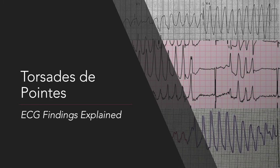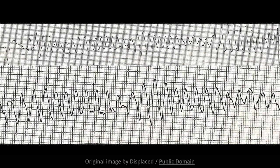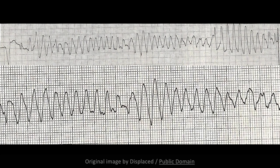This lecture will describe the classic ECG findings associated with torsade des points. Torsade des points is a polymorphic ventricular tachycardia. Note that the QRS complexes show progressive changes in height, width, shape, and axis. Torsade des points translates to 'twisting of the points' — quite an appropriate name, as its characteristic finding is a recurring reversal of waveform polarity. The gradual alteration in polarity gives the appearance of QRS complexes twisting around the baseline in a spindle-like fashion.